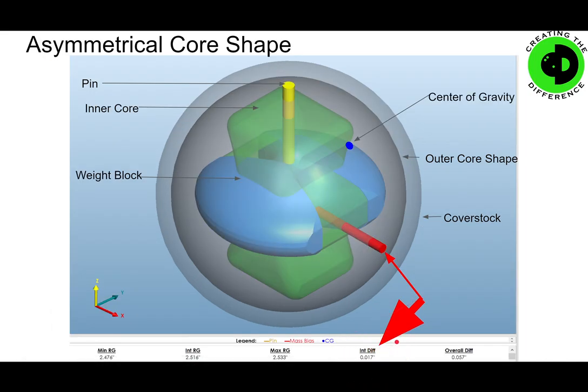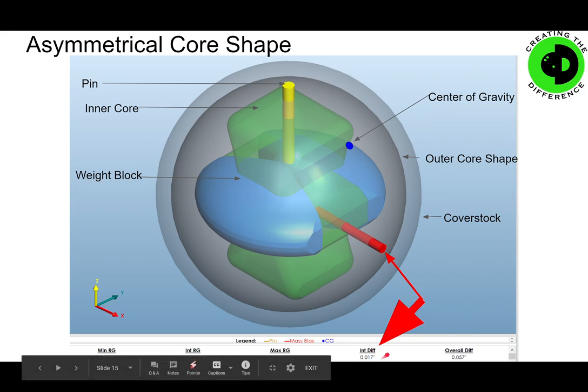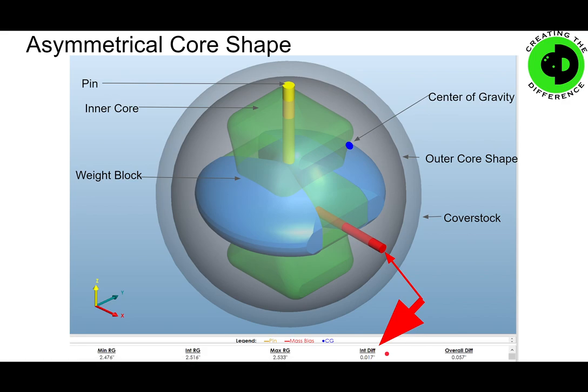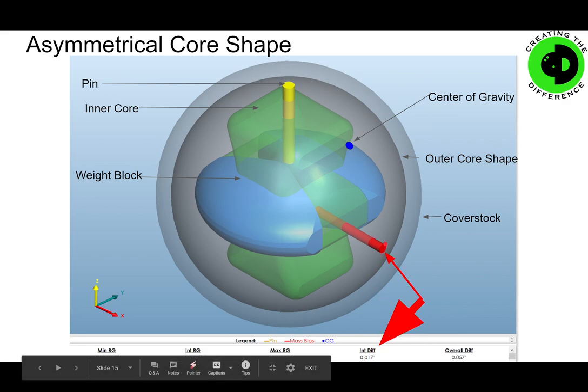So what does that mean? To break it down as simply as possible, if this intermediate differential number is above 10, it matters. If it's below 10, it doesn't matter. Most balls that have one of these markings on the surface, this number is above 10, which means it matters.